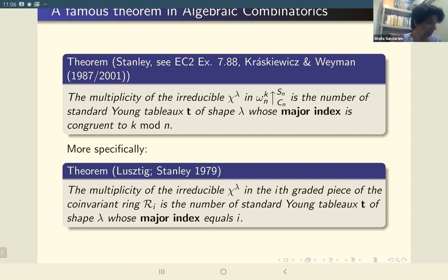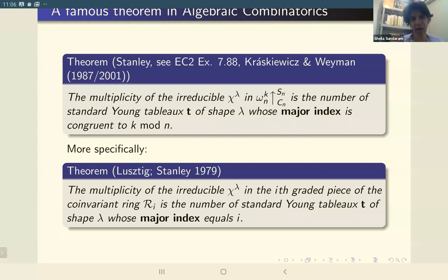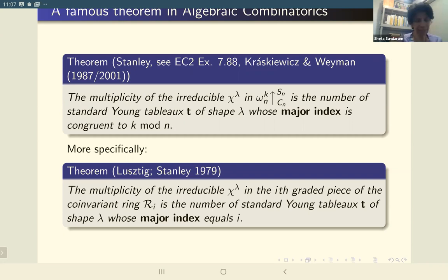It's a theorem of Lusztig and Stanley — maybe somebody knows a better reference, as I had a terrible time tracking it down. The multiplicity in the i-th graded piece of the co-invariant ring is just the number of standard tableaux whose major index is exactly equal to i. This is actually the first result from which the second one follows. I found this in a very roundabout way in a 1979 Bulletin of the AMS paper by Stanley. I don't know where the actual Lusztig result is, or if he ever published it — so if anybody knows, please tell me.